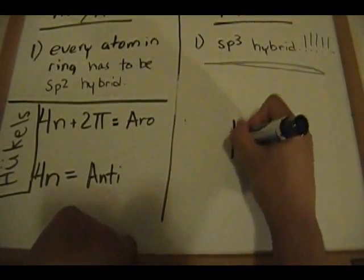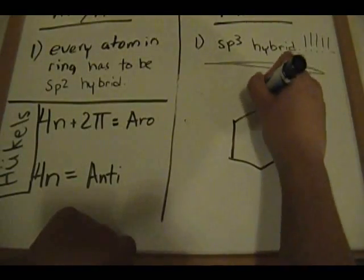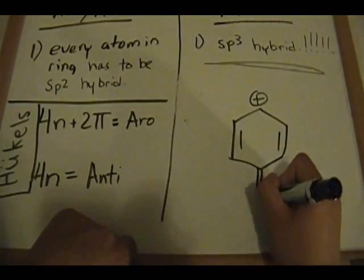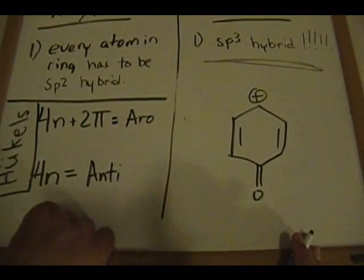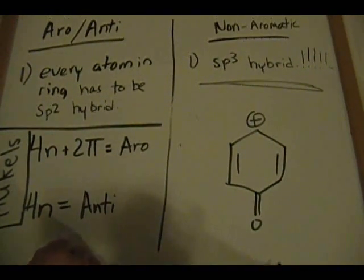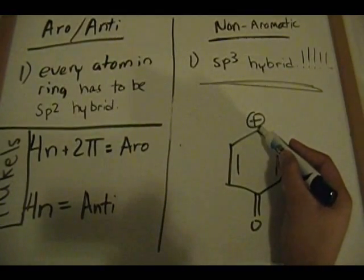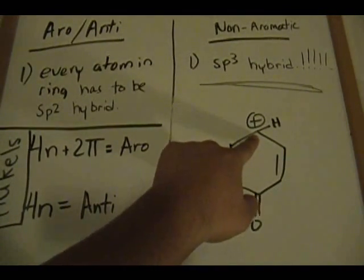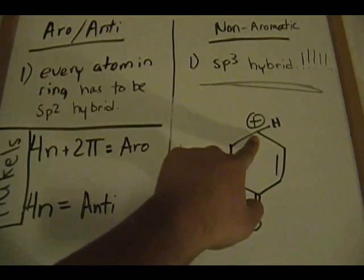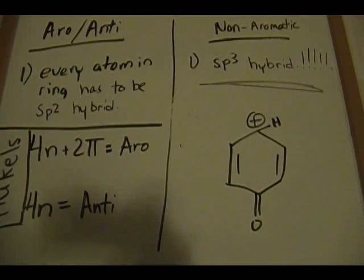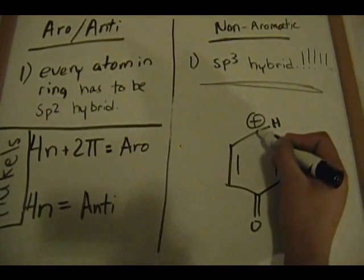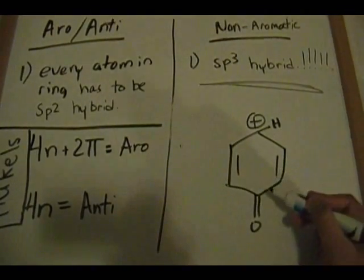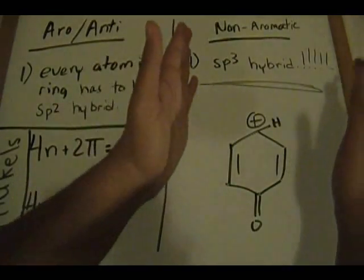Let's look at this next example — this will be the last one. This looks pretty scary, but no need to fear. Identify the hybridization. This carbon is sp2 because there's an H here, and the only way this carbon can have a positive charge is if it has three groups attached to it. You can double-check with a formal charge calculation — you need three groups attached to a carbon atom to get a +1 charge.